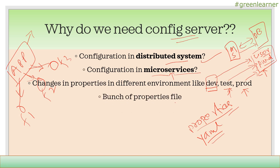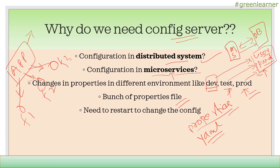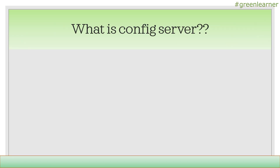There are a bunch of properties files that define the values of these properties, and currently you need to restart to change the config. As of now in a monolithic application, if you are not using config server and you want to make changes to configuration, you have to restart or redeploy your application to apply the changes in your properties config file. But when Spring Cloud Config comes into picture, you can make changes in your config files and these changes will reflect in your application at real time, saving yourself from restarting your application.